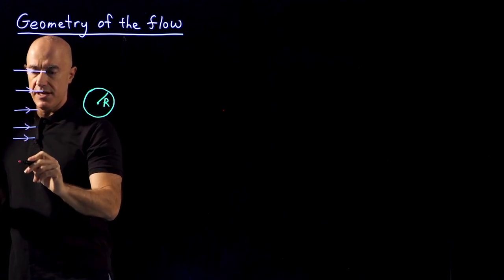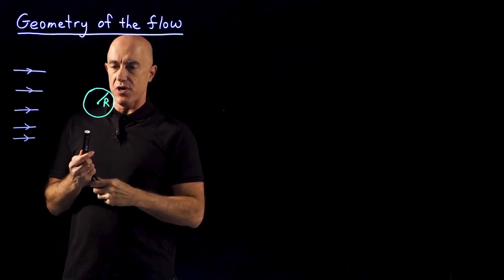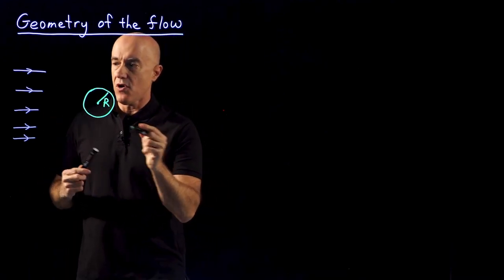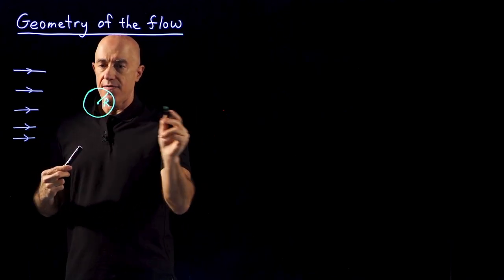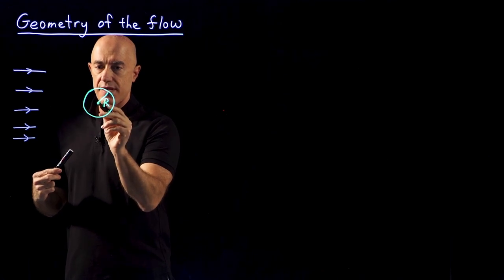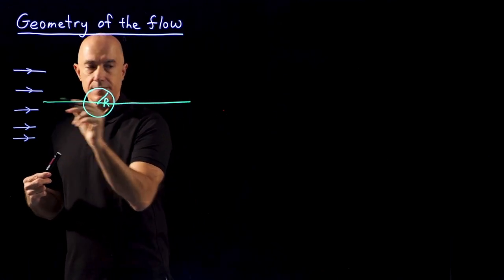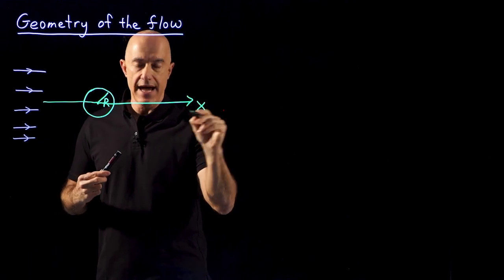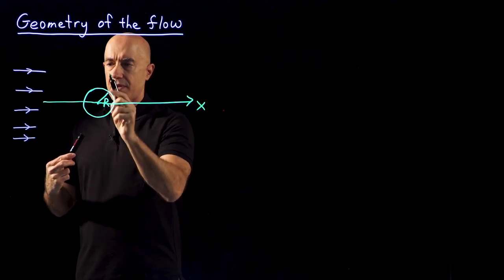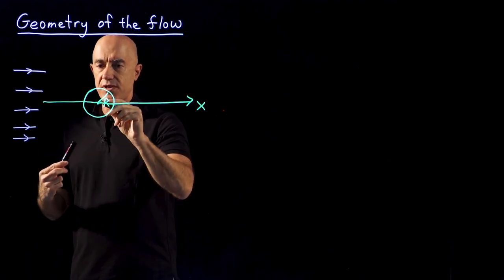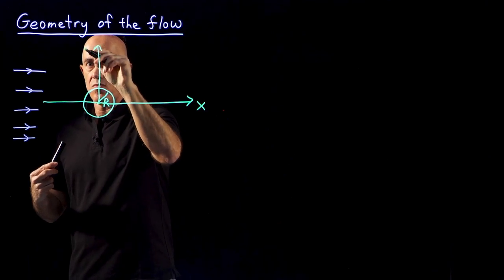So this is the free stream velocity. And now at this point we can draw a coordinate system. We want to draw the x-axis in the direction of the free stream velocity, so we draw the x-axis in this direction. This will be x. And we want to draw the y-axis perpendicular to the free stream velocity. So this is our y-axis.